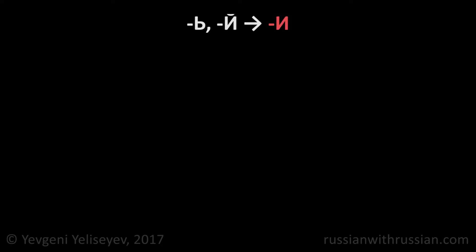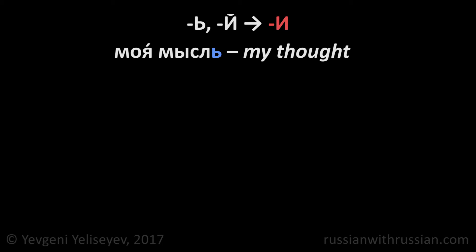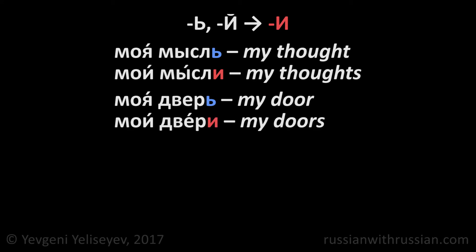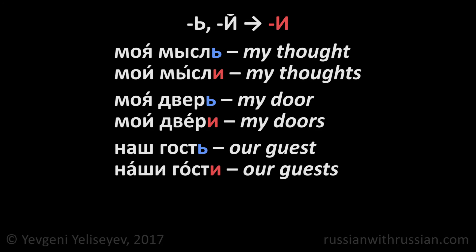And if the noun ends with a soft sign, we should replace this ending with и. Моя мысль — my thought, мои мысли — my thoughts. Моя дверь — my door, мои двери — my doors. Наш гость — our guest, наши гости — our guests.